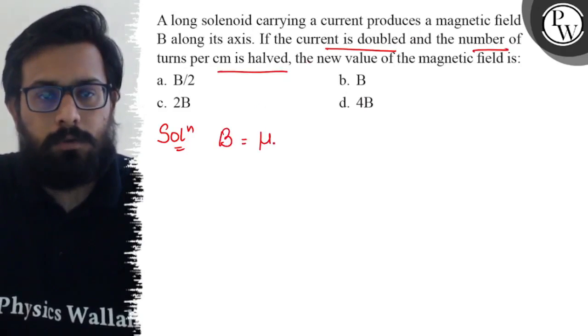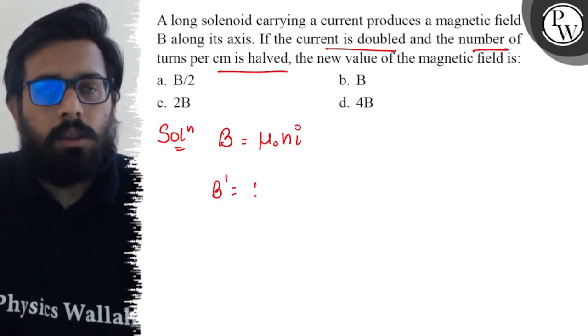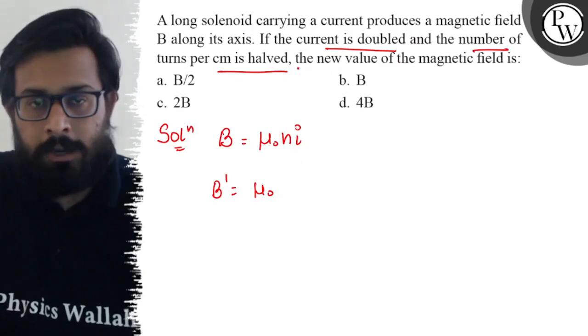In the new condition you are just reducing the value of the number of turns per centimeter to half and your current to two times.